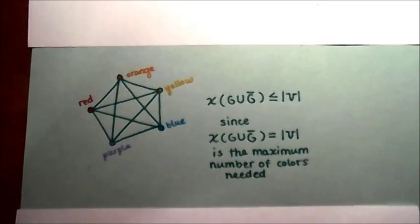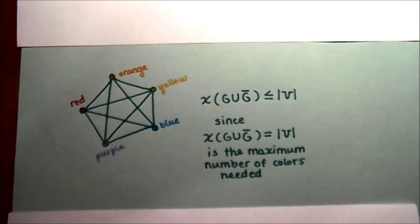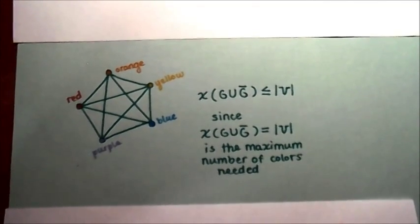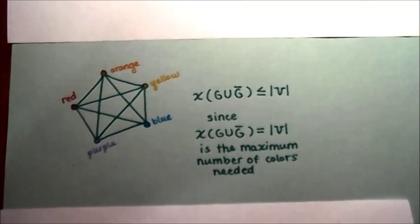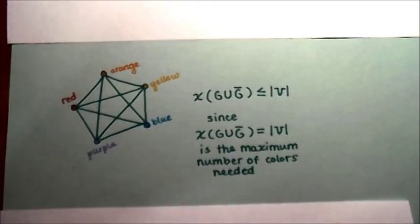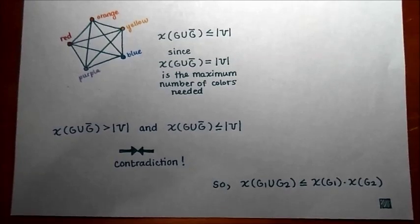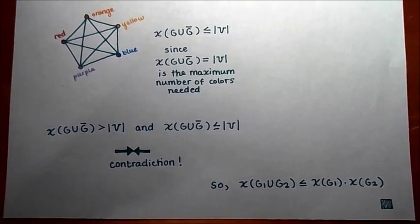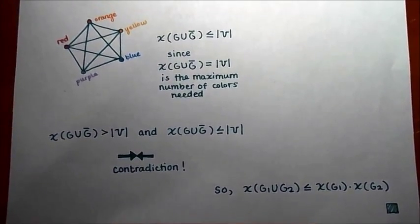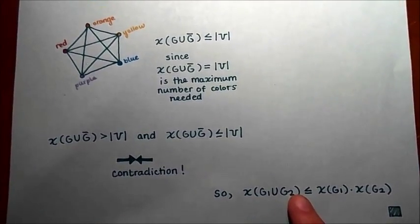Let's think about what we've just said. For any graph G, even the most connected graph — like the complete graph shown here on five vertices — the minimum number of colors is always less than or equal to the number of vertices. The maximum case occurs if we color each vertex a different color, but that's still only equal to the number of vertices, never greater. So we've shown the minimum coloring must be greater than the number of vertices, but we know it can't be. It must be less than or equal to the number of vertices. There is a contradiction, and thus the coloring of the union must be less than or equal to the product.